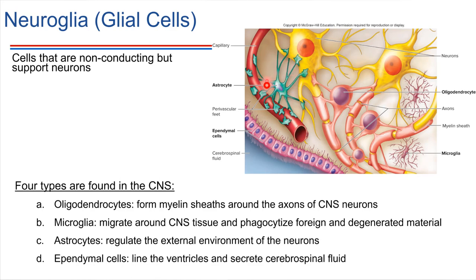Astrocytes — here's an astrocyte shown in green. Astrocytes do a lot of different things. They do a lot of work for maintaining things like ion balance around the neuron and providing nutrients to the neuron. They have a very close association with the bloodstream — see how it's wrapped around this capillary. The astrocytes are actually what provide the blood-brain barrier.